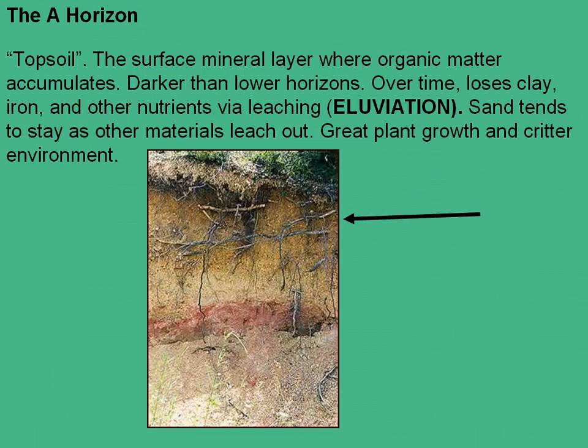Right below the O-horizon, you have the A-horizon, which is what most people refer to as topsoil. That's the mineral layer where organic matter has accumulated over time. It does tend to be darker than the lower horizons, and over time, through rain and leaching, the sand tends to stay in this area as other materials leach out. This is where a lot of the nutrients are stored in the soil, with a lot of plant growth, soil microbes, and other soil biota.